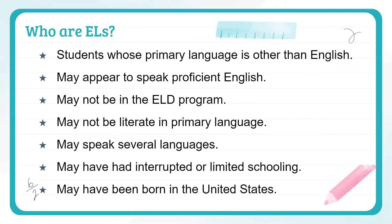Who are ELs? This is just a little background knowledge. If you already work with ELs, these are things you already know, but I hope this sets the stage for you. ELs are students whose primary language is anything other than English. They may be able to speak proficient English, may or may not be in an ELD program, may not be literate in a primary language, speak several languages, or have what we call interrupted or limited schooling.